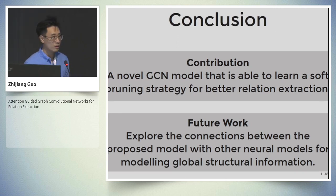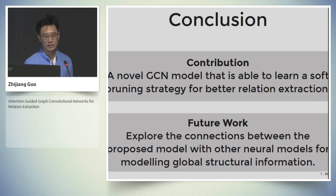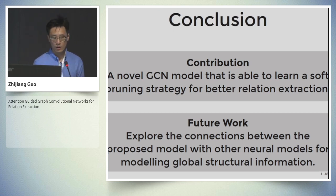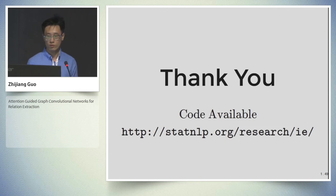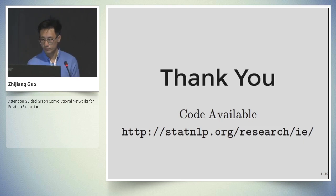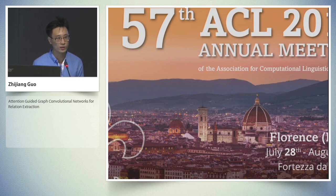To conclude, the main contribution of our work is a novel GCN model that learns a soft pruning strategy for better relation extraction. For future work, we would like to explore connections between the proposed model and other neural models for modeling global structural information. Our code is available on the website statNLP research. Thank you, that's all.